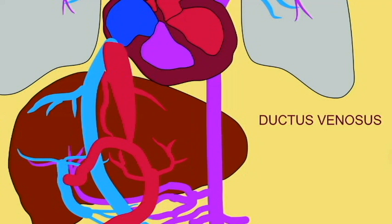This shunt is trumpet-shaped, having a very narrow isthmus where it meets the umbilical vein. This isthmus is only about half a millimeter in width in mid-gestation, and perhaps two millimeters later in gestation.